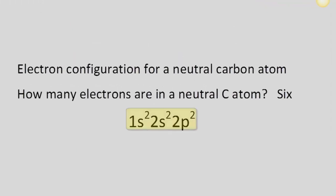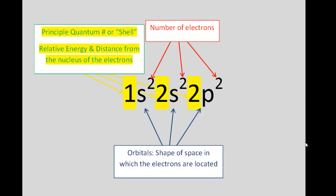Here is an electron configuration for a neutral carbon atom. I want to dissect this electron configuration and show you those three components. It's important to know how many electrons are in the atom or ion — for a neutral carbon atom there are six electrons. Dissecting the configuration, it reads 1s2, 2s2, 2p2.